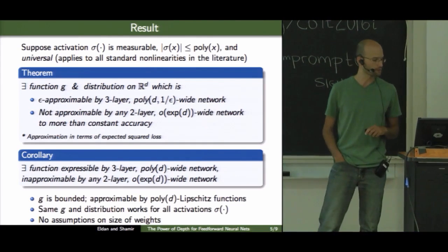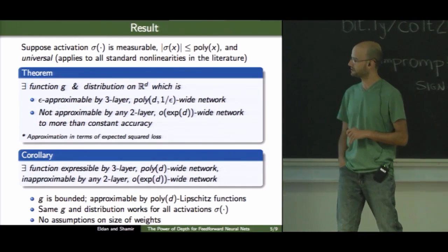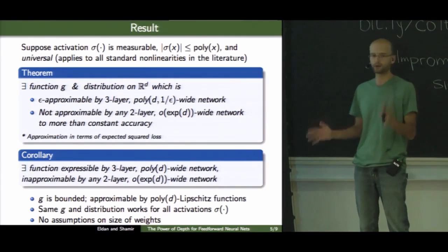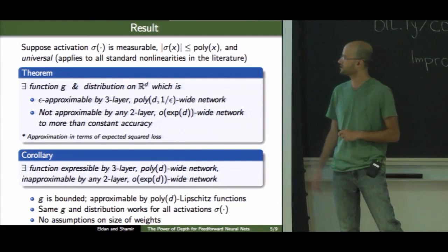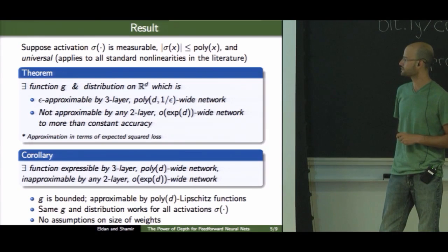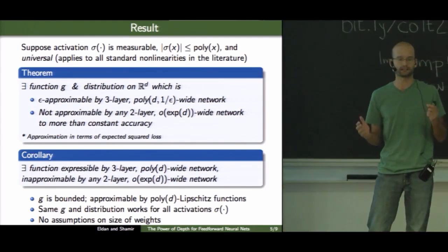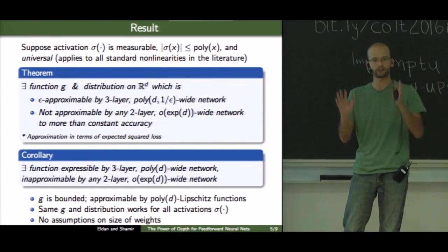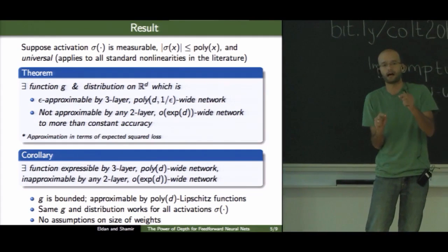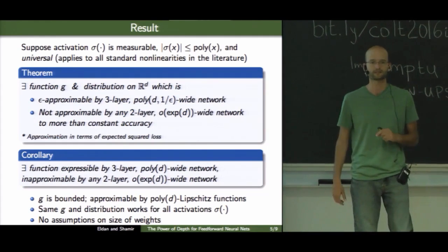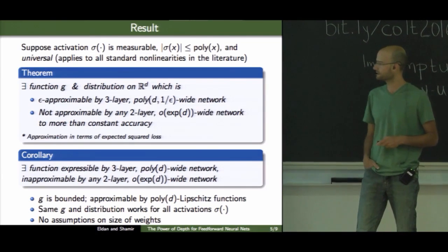A few other comments about this result. I'll show you later on what is this function g, but basically it's a reasonably nice function. It's bounded, has bounded support. You can approximate it by a Lipschitz function with respect to the distribution. Also, we don't need to tailor the construction for different activation functions. Using the same function, same distribution would work for all activations. For instance, even if I allow you to tailor the activation in some smart way to this function, still with a two-layer network, you won't be able to approximate it.